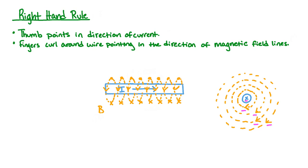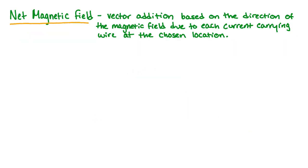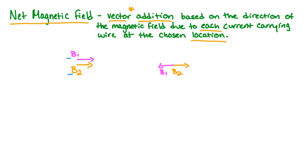Now that we've refreshed our memory on how to find the magnetic field around a current-carrying wire, let's determine how to find the net magnetic field around more than one wire. To determine the net magnetic field, we need to do vector addition based on the direction of the magnetic field due to each current-carrying wire at the chosen location. We need to do vector addition because our magnetic field is a vector. This means that if the two magnetic fields due to the current-carrying wires with magnitudes B1 and B2 point in the same direction, we can add the magnitudes together.